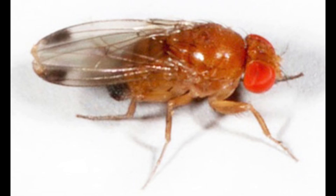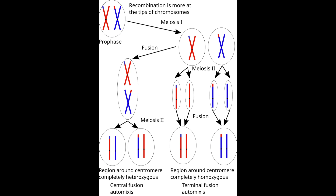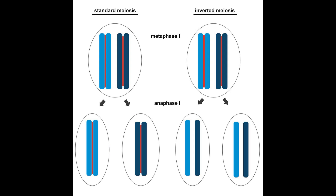Some asexual species like Drosophila mangaberi solve this problem by doing only central fusion automixis and eliminating crossing over altogether, making the offspring identical to the parents. With regard to terminal fusion automixis, the reduction in allelic diversity is clearly problematic if there are many deleterious recessive alleles. However, terminal fusion automixis can be stable if recombination is significantly reduced or paired with a phenomenon known as inverted meiosis. Inverted meiosis occurs when sister chromatids separate before homologous chromosomes do, which also leads to a reduction in recombination.